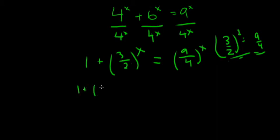1 plus 3 halves to the x power is equal to... now 9 over 4 is equal to 3 halves squared, so I'm going to substitute that in: 3 halves. Because it's squared, we can move that outside the parentheses using the power rule, and so this is equivalent to 3 halves to the 2x.